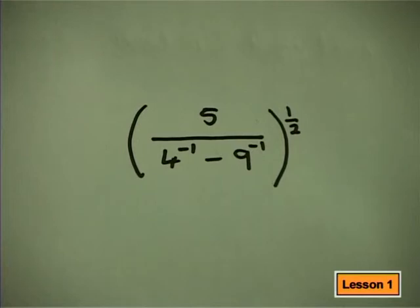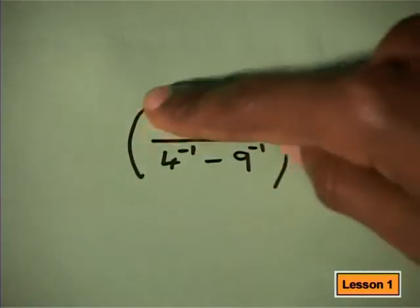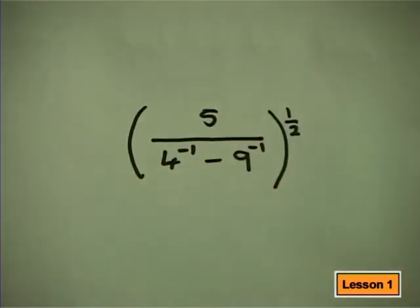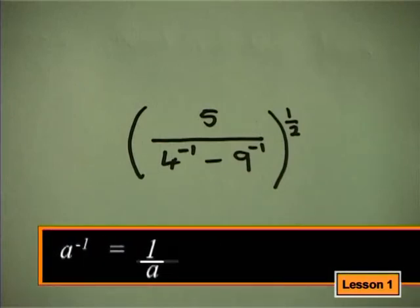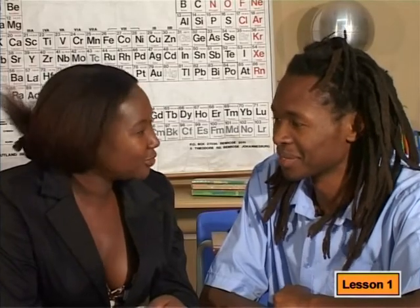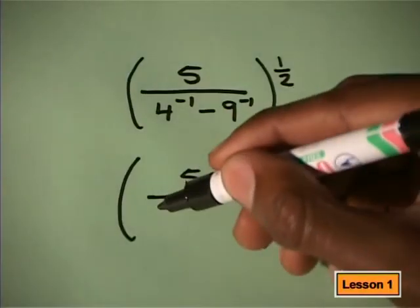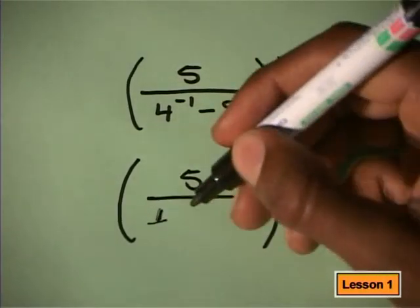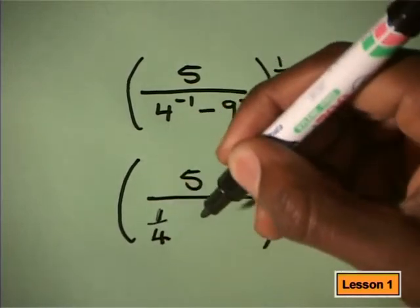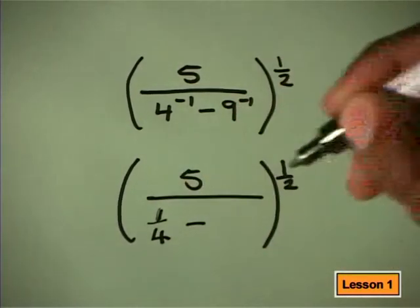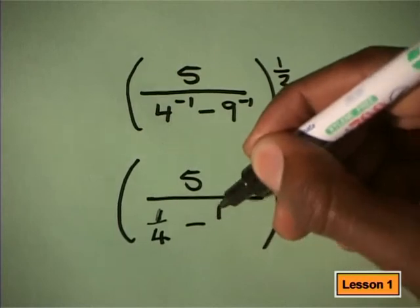The only thing I can see are these bases here that have negative powers. We can simplify them by using one of our laws. The law says that if you have a negative power, you divide one by the base and then you can make the power positive. Well spotted. Can you do that for us? Sure. We can write this 4 to the negative 1 as 1 divided by 4 or a quarter. 9 to the negative 1 is the same as 1 divided by 9.